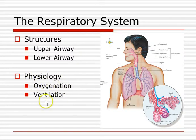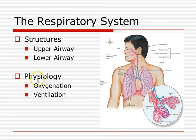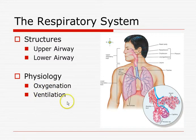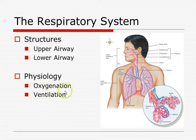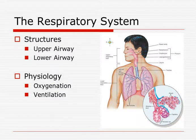We're going to go through oxygenation and ventilation in the next lecture, so I won't get too in-depth here. Essentially, ventilation is the exchange of carbon dioxide and oxygen, and oxygenation happens at the cellular level. We'll go over oxygenation, ventilation, and the difference between the two in the next lecture.